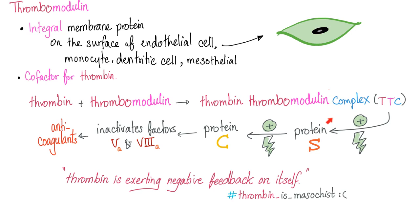To understand protein C and protein S, we need to talk about thrombomodulin. Where did thrombomodulin come from? From the endothelium. How about protein C and protein S? They are proteins that came from the liver, just like the rest of the coagulation factors. And by the way, these need vitamin K as a cofactor — it's called gamma carboxylation, and the enzyme is gamma glutamyl carboxylase.